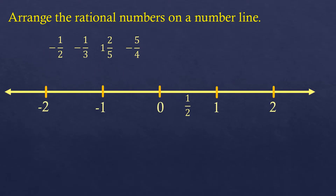So 1 half is placed here — it's positive, so it's on the right side of 0. And since it's 1 half, it's exactly in between 0 and 1.